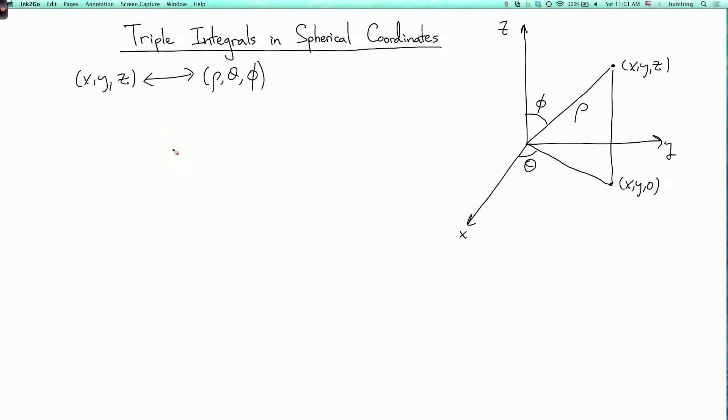Now here are the formulas to convert between Cartesian and spherical coordinates. So first, we can draw a horizontal line up here from our point to the z-axis. So this goes to the point zero, zero, z. The length of this horizontal line is r, as in cylindrical coordinates. And the height of this little piece of the z-axis is z.